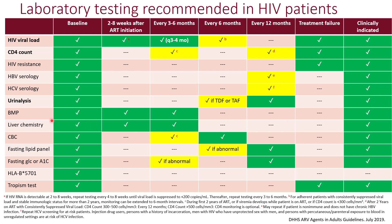For basic metabolic panel and liver chemistries, obtain them at baseline and then 2 to 8 weeks after ART initiation to ensure the patient is tolerating the drugs, then every 3 to 6 months to monitor for drug toxicity. For complete blood count, obtain at baseline and whenever a CD4 count is being checked. At the very least, CBC should also be obtained every 6 months and if clinically indicated.